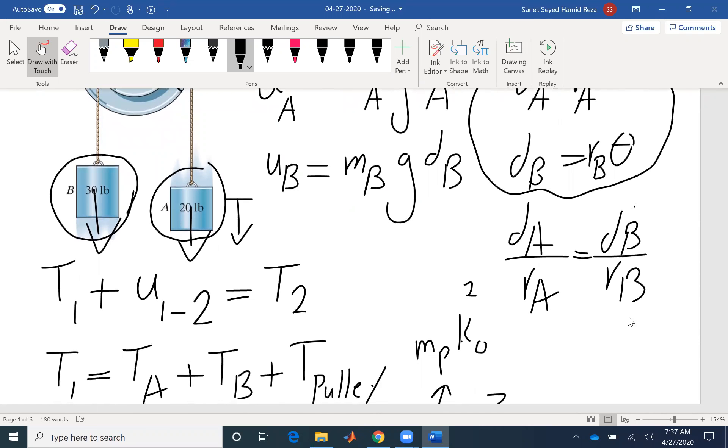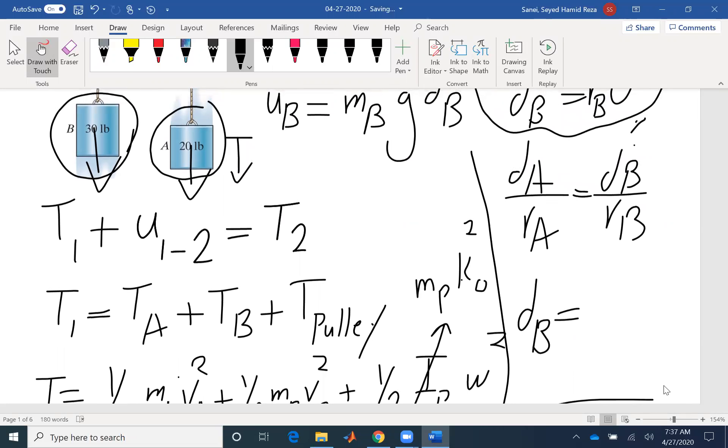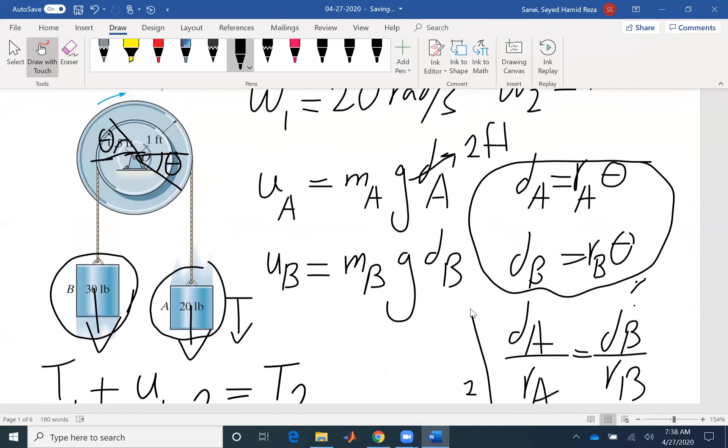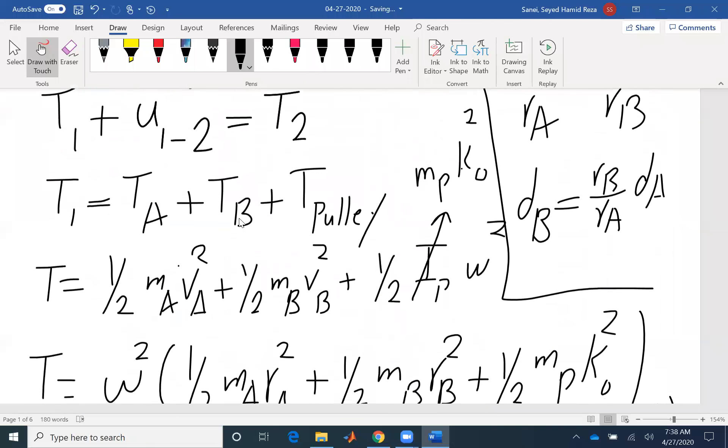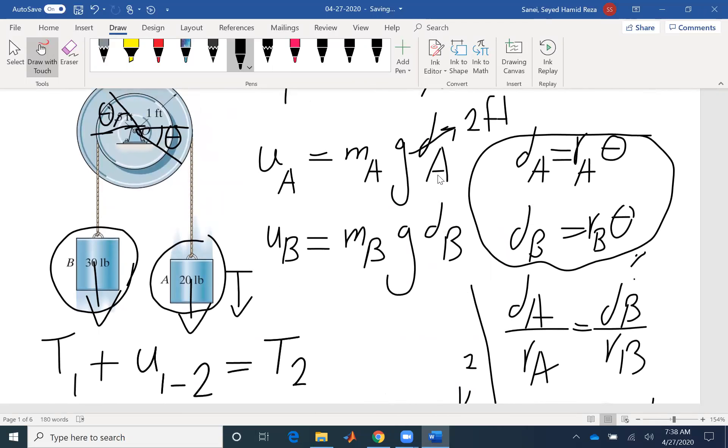So I can write dA over RA is the same as dB over RB. I got this by looking at these two equations. So the only unknown is dB. So I can find dB here. It should be RB over RA times dA. If I look at my problem, RA is 1, RB is 0.5. So this one would be half. Also displacement of A would be 2. So the displacement of B would be 1 foot. And it's going upward.